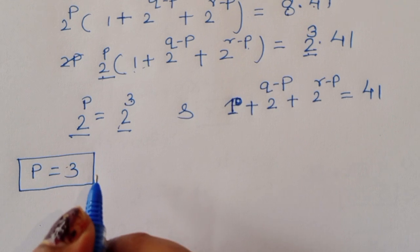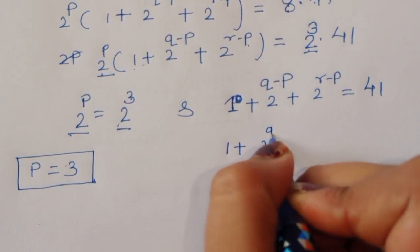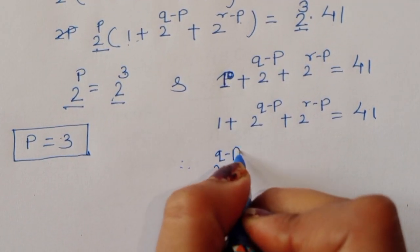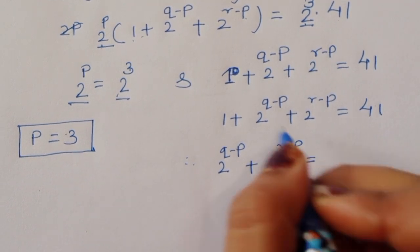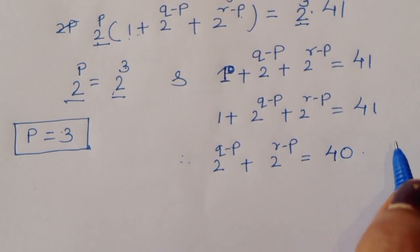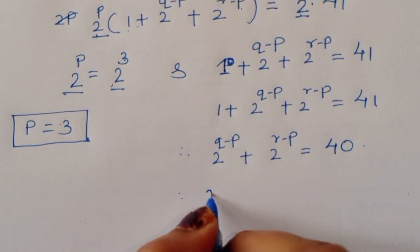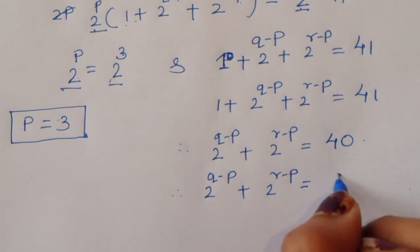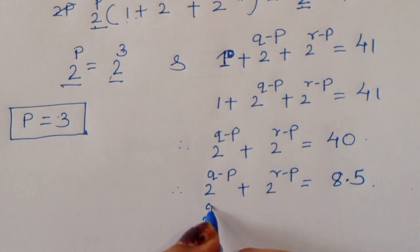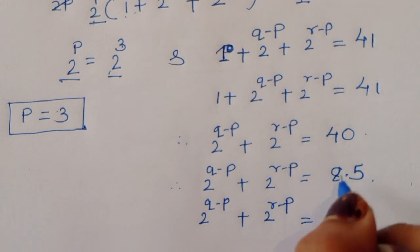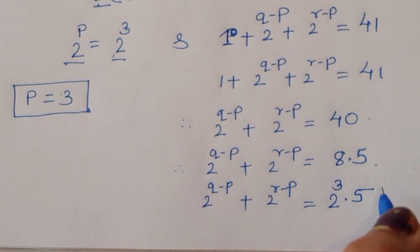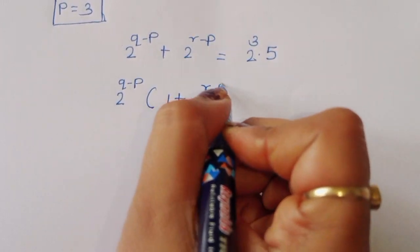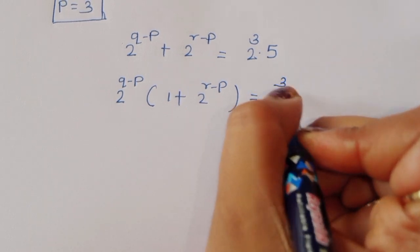From 1 + 2^(Q−P) + 2^(R−P) = 41, we subtract 1 to get 2^(Q−P) + 2^(R−P) = 40. We can write 40 = 2^3 × 5. Taking 2^(Q−P) as common: 2^(Q−P) × (1 + 2^(R−Q)) = 2^3 × 5.